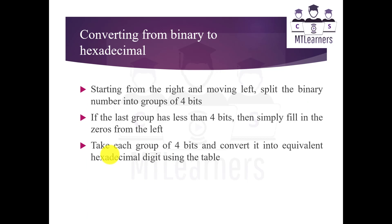Now, converting from binary numbers to hexadecimal: starting from the right and moving towards the left, split the binary number into groups of 4 bits. If the last group has fewer than 4 bits, simply fill in zeros from the left side. Adding zeros on the left does not change the number's value. Take each group of 4 bits and convert it into the equivalent hexadecimal number using the table.